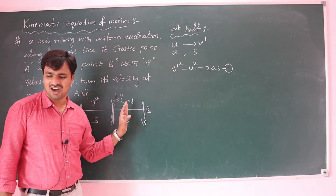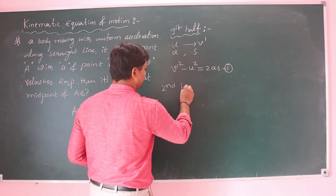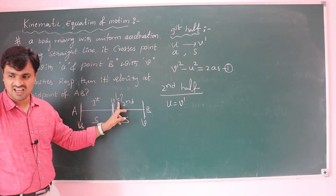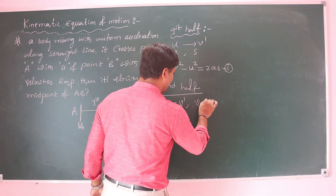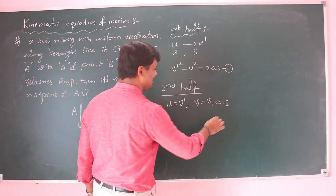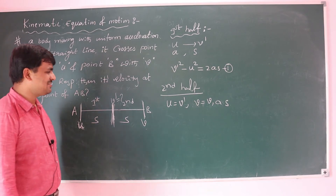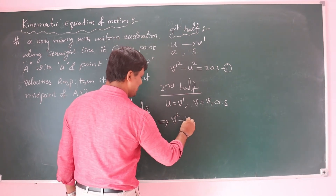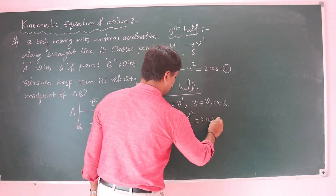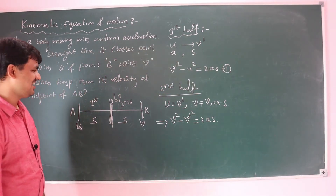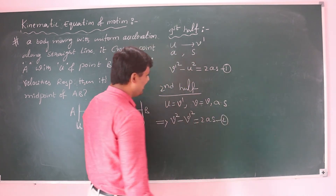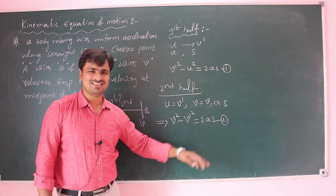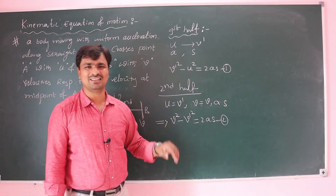In the second half, initial velocity is V dash and final velocity is V, with the same acceleration a and displacement s. Applying the equation of motion: V² minus V dash² equals 2as. This gives equation 2.